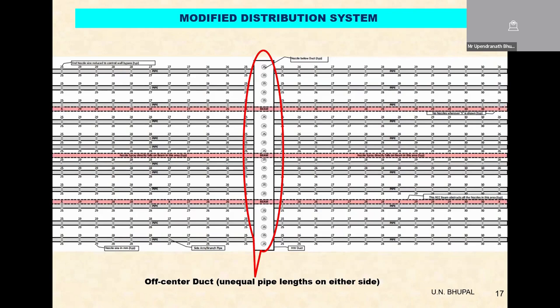On the left-hand side, the overall length of the PVC distribution pipes is smaller than the length on the right-hand side, so there is unequal distribution of hot water on both sides. The only way to rectify it — because the civil structure is already standing — is by varying the nozzles. If you see, the nozzle sizes are continuously varying. The size of the nozzle is smaller at the end because we want to eliminate wall bypass. The nozzle sizes have been calculated such that the discharge through each nozzle on either side is fixed and constant.